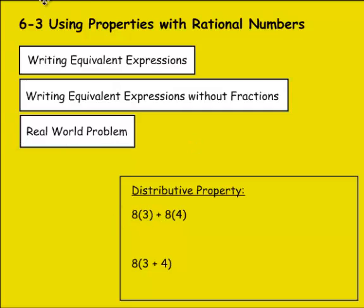Let's start with an example of the distributive property. If I had 8 times 3 and I added 8 times 4, 8 times 3 would give me 24, and then 8 times 4 would give me 32. If I added 24 and 32 together, that would give me a total of 56. Since I'm multiplying the 3 and the 4 by 8, I could just simplify this very easily by adding 3 and 4 together before multiplying.